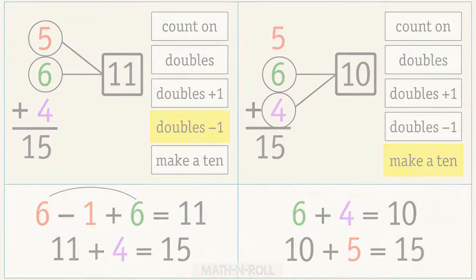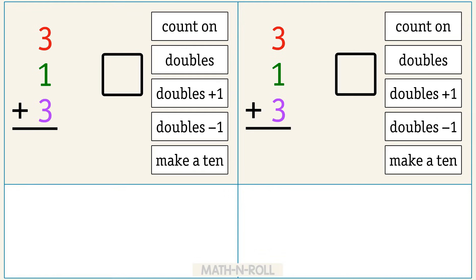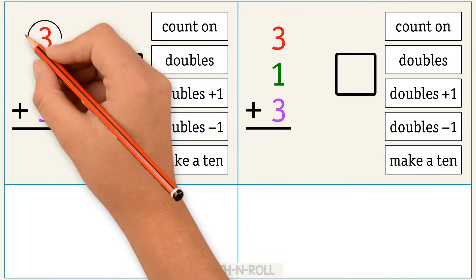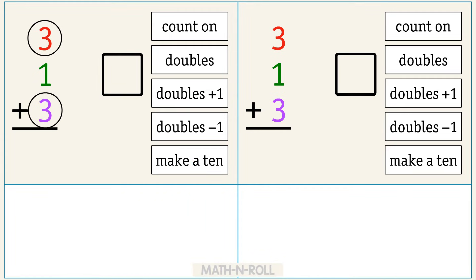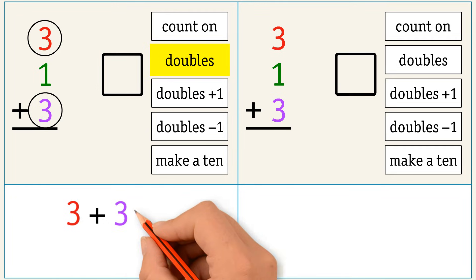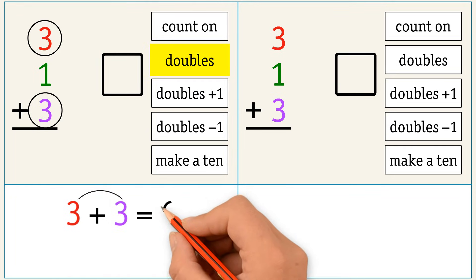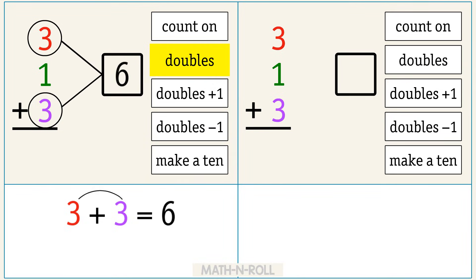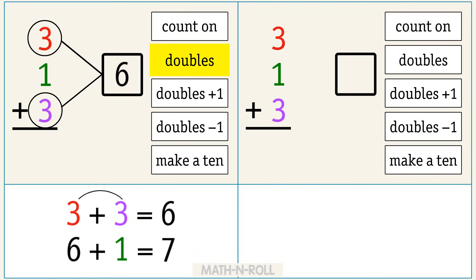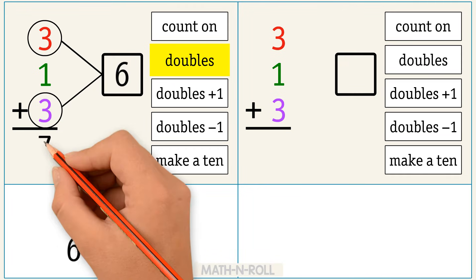Let's try another example. 3 plus 1 plus 3. Circle 3 and 3. We're going to use the doubles method. 3 and 3 are doubles and we know that 3 plus 3 equals 6. Next, we add 1 to 6 to get 7. So 3 plus 1 plus 3 equals 7.